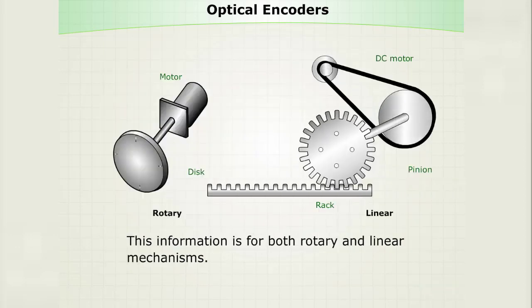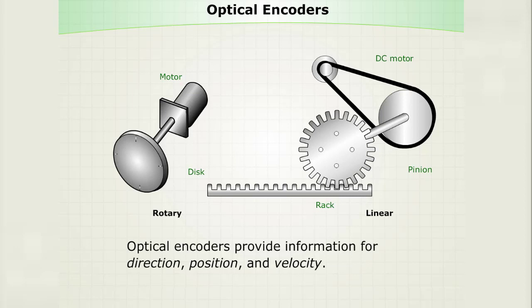This information is for both rotary and linear mechanisms. Optical encoders provide information for direction, position, and velocity.